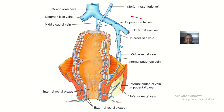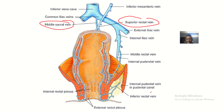I can see the superior rectal vein giving branches to the rectum, the middle rectal vein giving off a branch into the rectum, and also the inferior rectal vein giving off branches. All of these give branches into the rectum and they drain deoxygenated blood and waste products from the rectum.